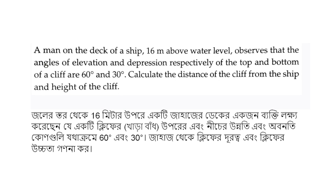A man on the deck of a ship 16 meters above water level observes that the angles of elevation and depression respectively of the top and bottom of a cliff are 60 degrees and 30 degrees. Calculate the distance of the cliff from the ship and the height of the cliff.